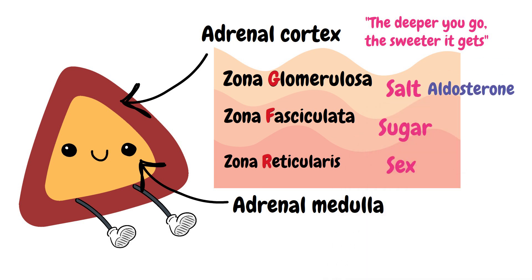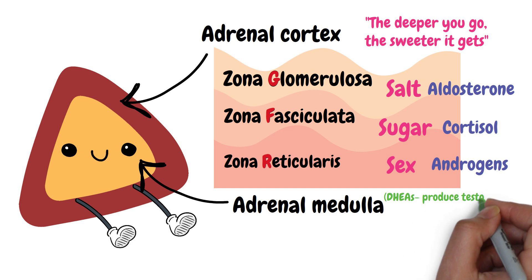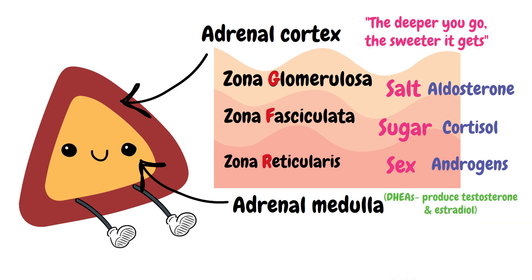Salt is aldosterone, because aldosterone absorbs sodium — salt — and excretes potassium. Sugar is cortisol, as cortisol can raise your blood sugar levels. Sex is androgens, which are the sex hormones. The zona reticularis produces androgen precursors, mostly dihydroepiandrosterone (DHEA), which is used to synthesize testosterone and estradiol.